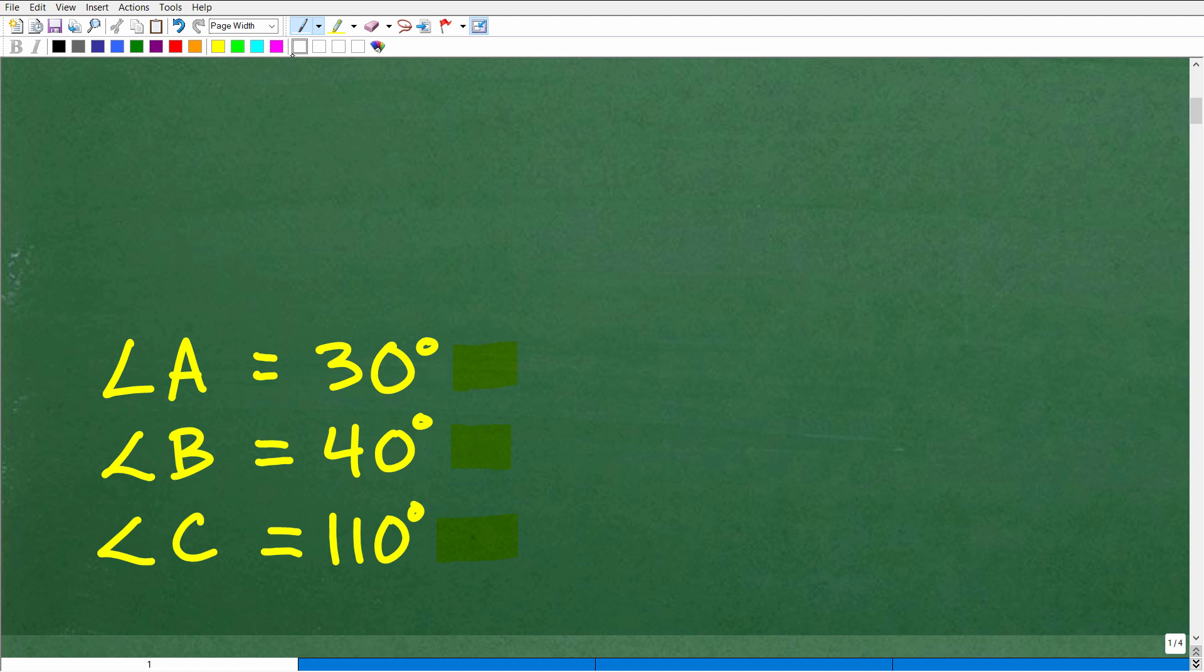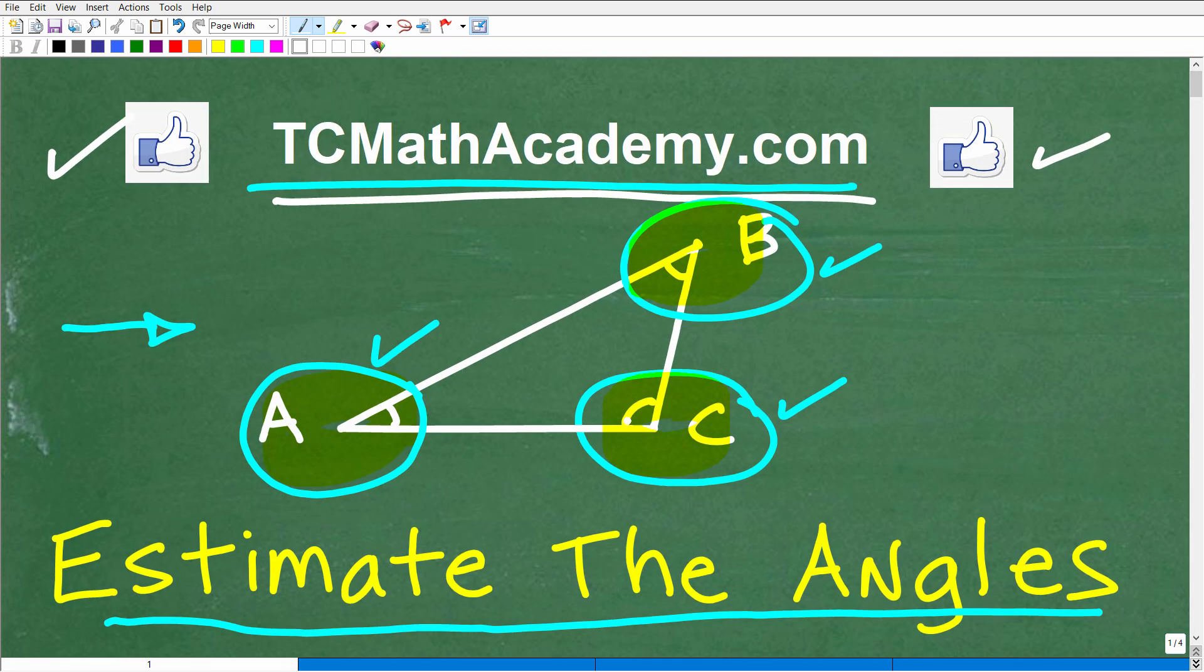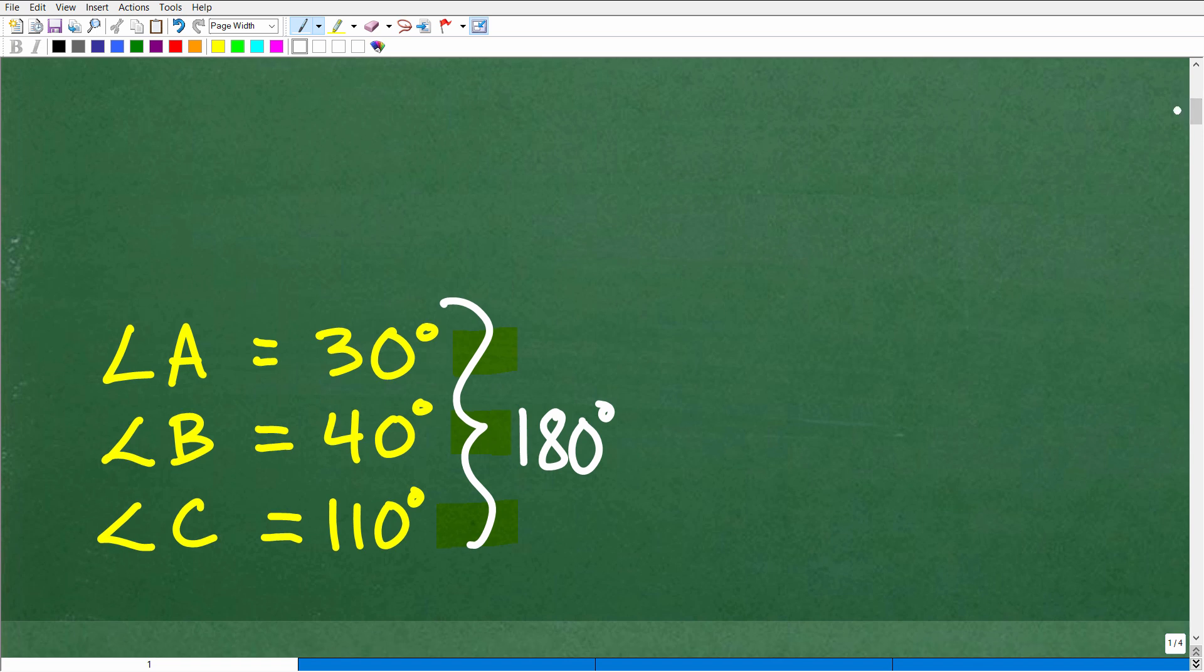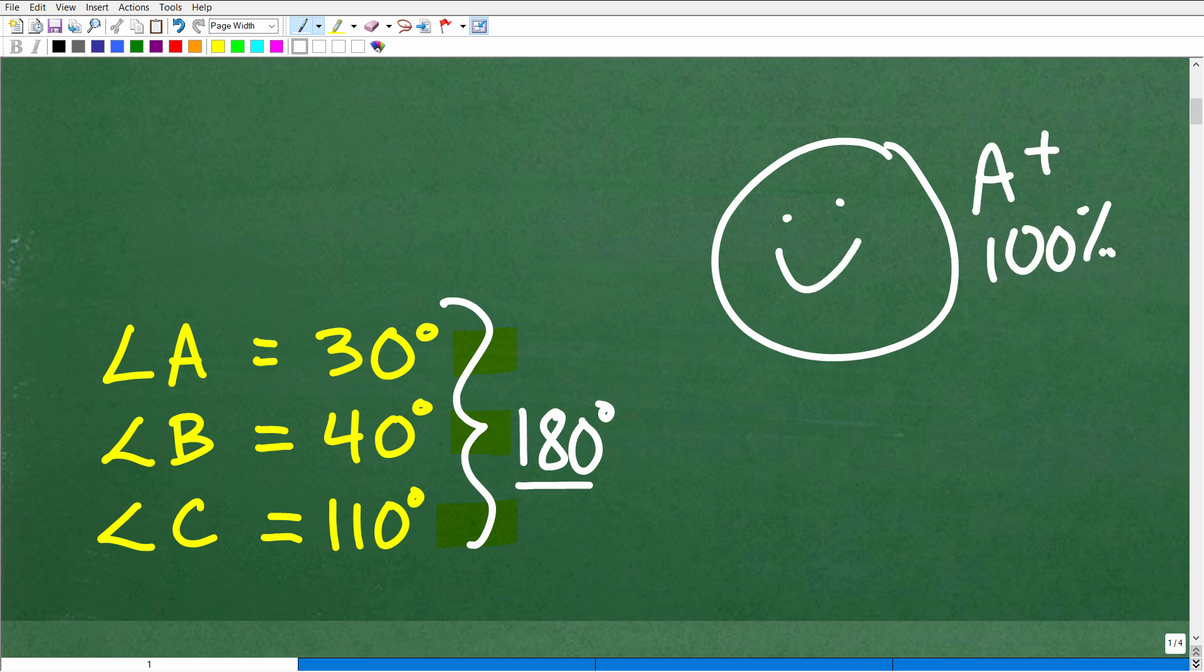The one thing I didn't mention in the beginning, because I wanted to give you a full opportunity to mess around with this, is whatever estimates you come up with for each of these respective angles, the entire sum of these angles has to be 180 degrees. The sum of the angles of a triangle is always 180 degrees. If you got pretty close to this, and if your angles add up to 180 degrees, let's celebrate your success with a nice happy face, an A+, and a 100%.